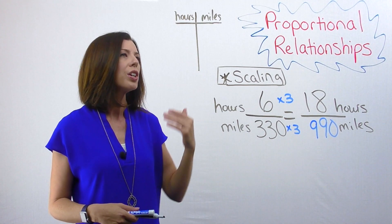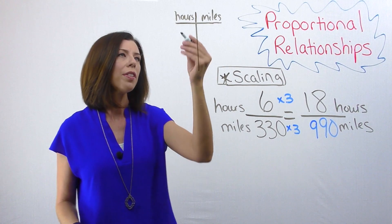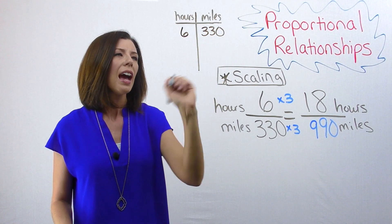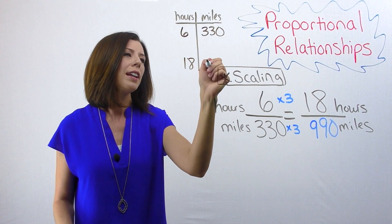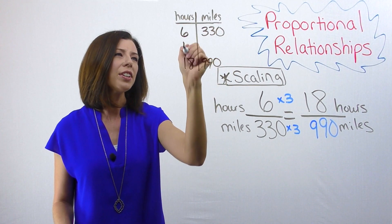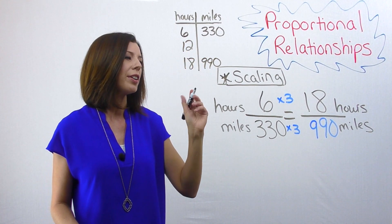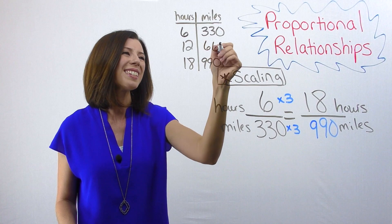I can also think of this using a T-chart. So I know that in six hours I can drive 330 miles, and I know that in 18 hours I can drive 990 miles. And I could even think about halfway between these, in 12 hours I could drive 660 miles.